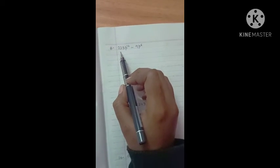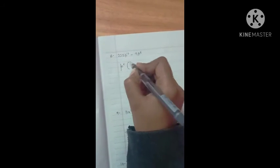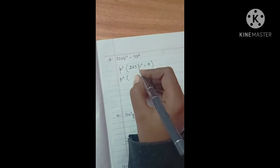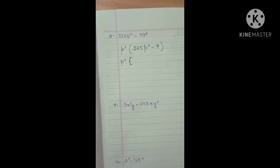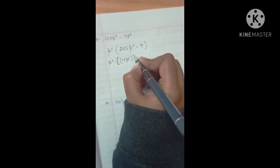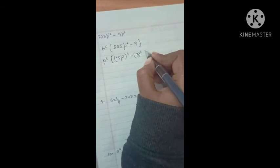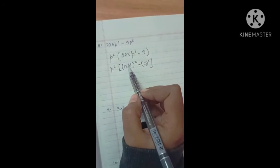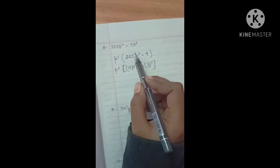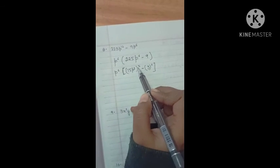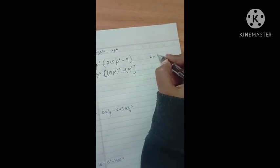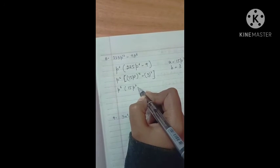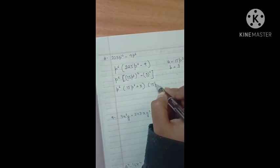In this question, we first take p⁶ as a common factor, giving p⁶(225 - 9). Now, 225 is 15², and p⁶ can be written as (p³)². So we have (15p³)² - 3². Here a is 15p³ and b is 3. Applying the identity, we get p⁶(15p³ + 3)(15p³ - 3).